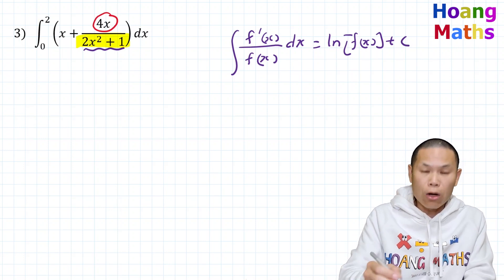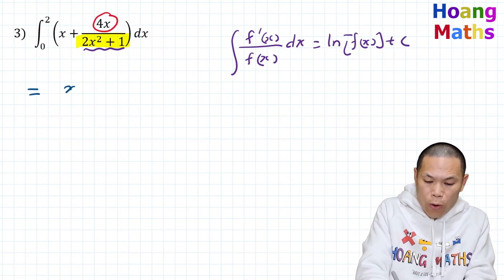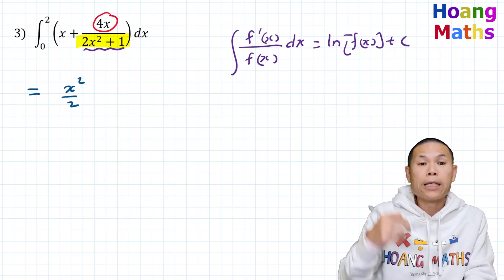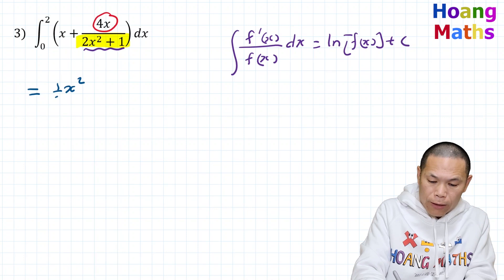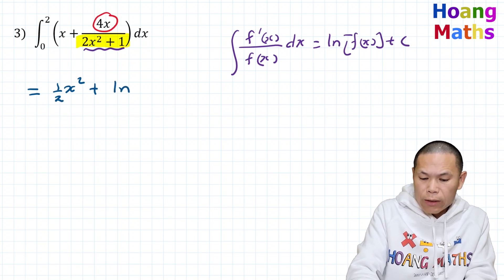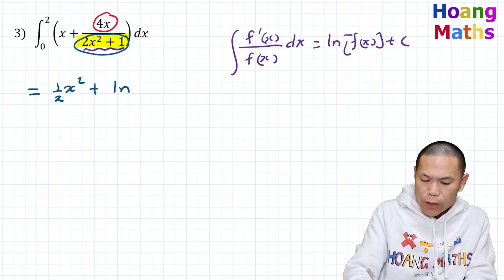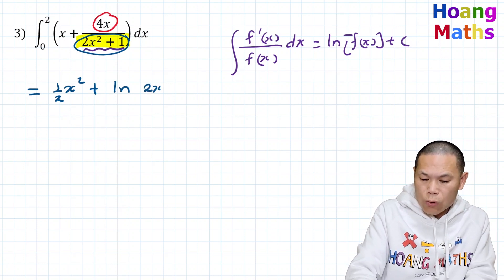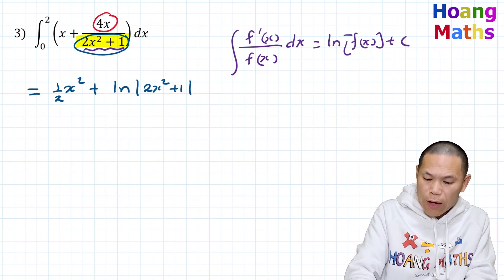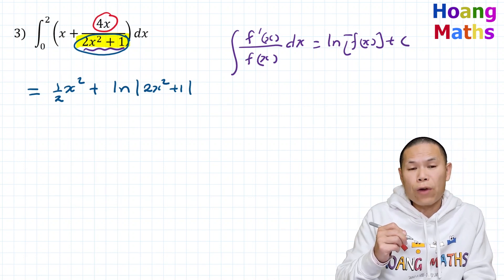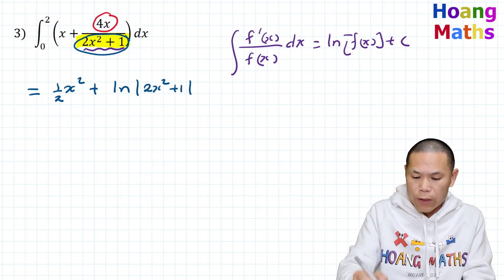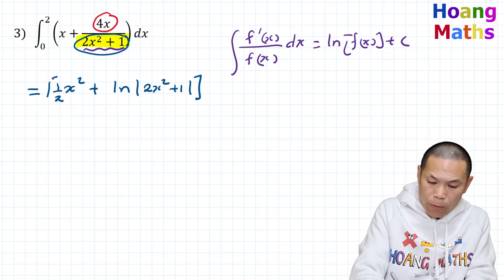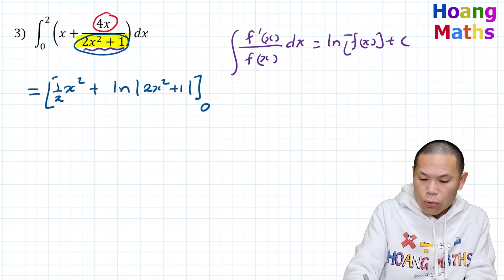So I can write a half of x squared, and then we add ln of 2x squared plus 1 with absolute value. But if you do not write the absolute value it is still correct, because x squared is always positive. So the integrated expression is x squared over 2 plus ln|2x squared plus 1|, evaluated from 0 to 2.